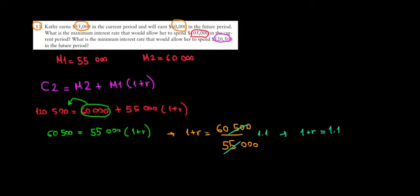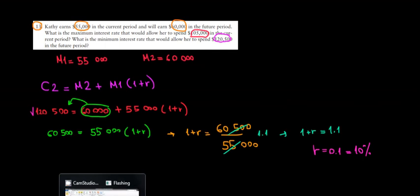And that means that the interest rate is equal to 0.1 or 10%. So if we have this interest rate and we compound our income from the first period, we can achieve our desired consumption in the second period, which is $120,500. And we are done.